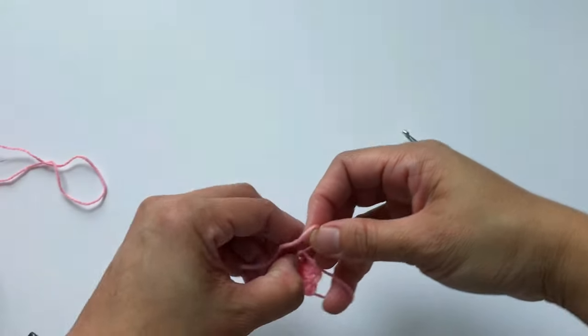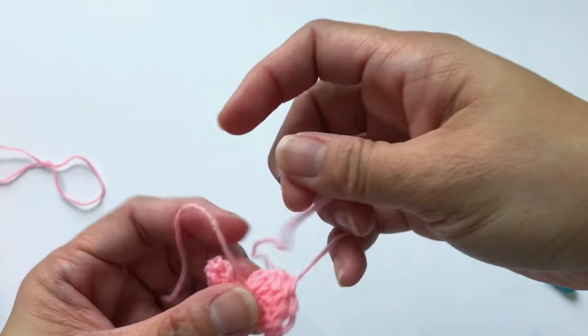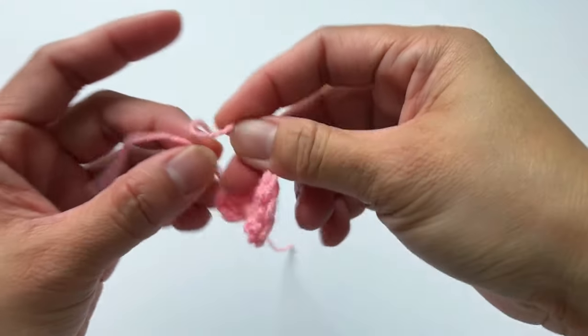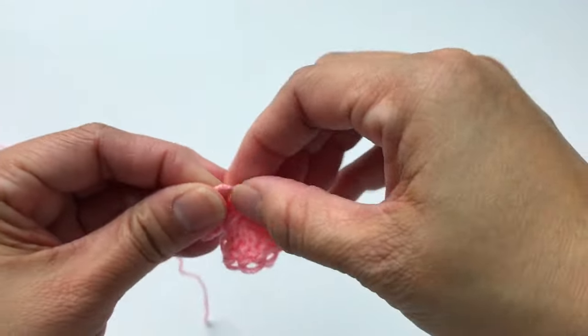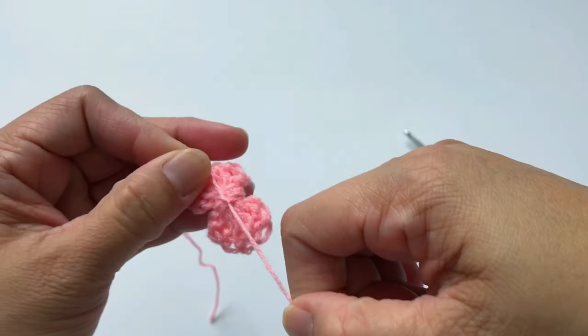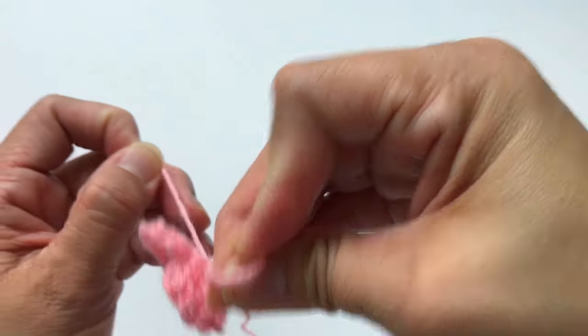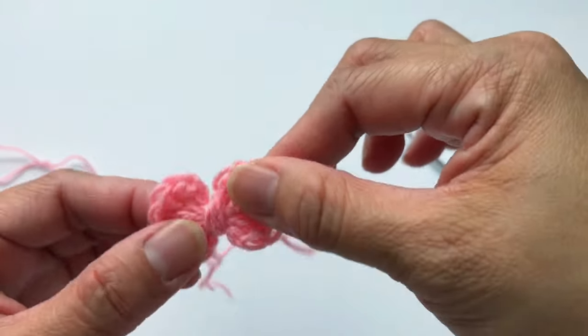And here I'm going to tie a knot, just to secure both yarns together. Okay, this is the first knot, and I'm going to make a double knot, just to be extra secure.